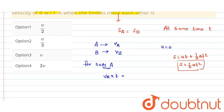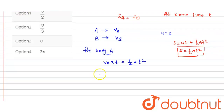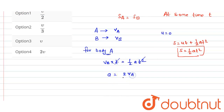We can write that Va times t equals half A t squared. Cancelling one t from both sides, acceleration A equals 2Va divided by t. So this is the acceleration of body B.